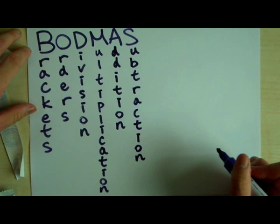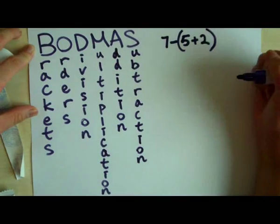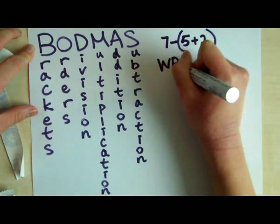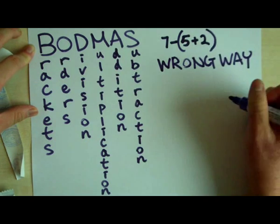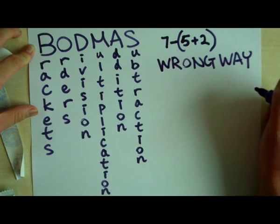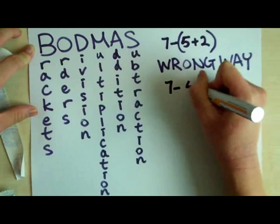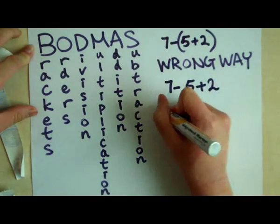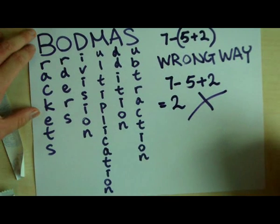Let's start with brackets. Here is an example: 7 minus open bracket 5 plus 2 close bracket. Most people do this the wrong way — they completely ignore the brackets and just go through the equation. So this is the wrong way: 7 minus 5 plus 2 equals 2.